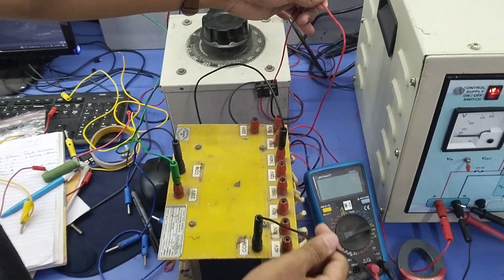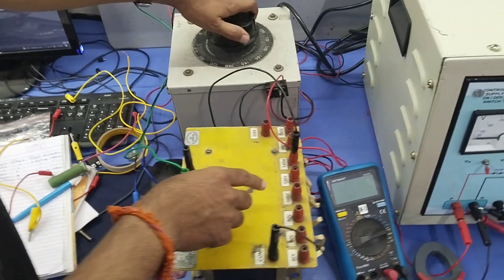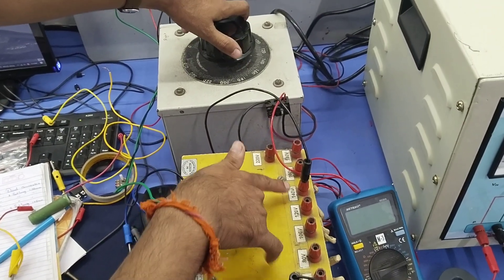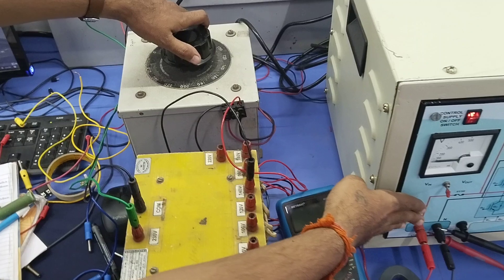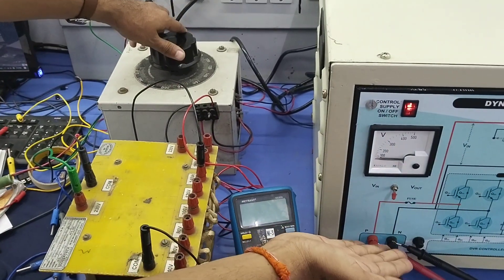The output of this fixed transformer is connected here. When variac value is zero, at that time input voltage to this will be 140V. Once we increase the variac voltage here, this voltage gradually can be increased to 300V.